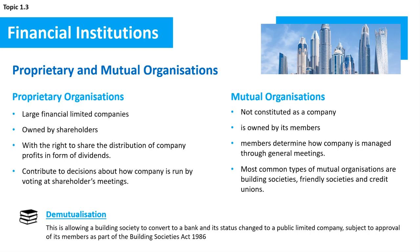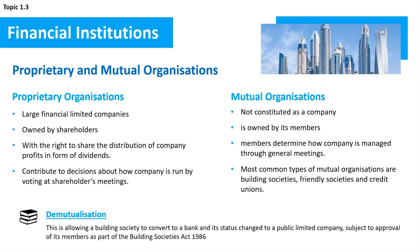Due to the windfall for members on demutualization, building societies considering conversion placed restrictions on the opening of new accounts to protect their members from people opening an account purely to profit from the subsequent allocation of shares — a practice known as carpet bagging.